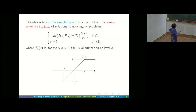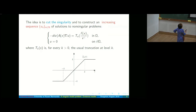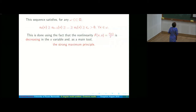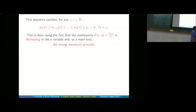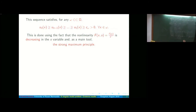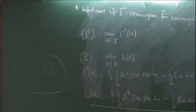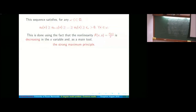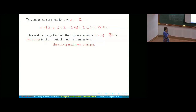For each N you look at the solution U_N of that problem: minus divergence of A(∇U_N) equals T_N(F / U_N^γ). This sequence U_N is decreasing, and one can show that for every x in any compact subset ω' of Ω, the sequence has a strictly positive infimum depending on ω'. This is because the nonlinearity is decreasing and the main tool is the strong maximum principle.